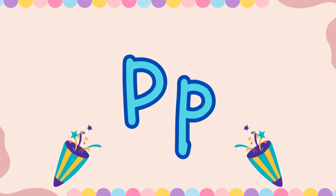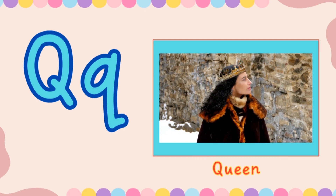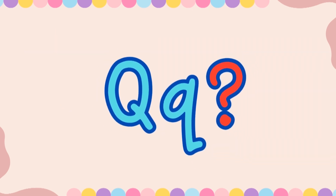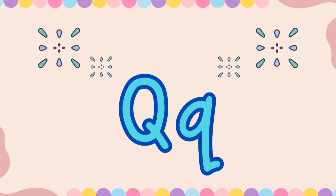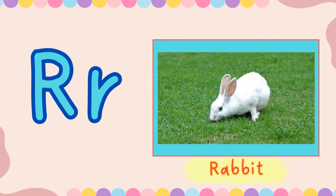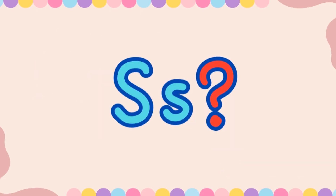P! Very good! This is letter Q. And Q is for Queen. What letter is this? Q! Very good! This is letter R. And R is for Rabbit. What letter is this? R! Very good! This is letter S. And S is for Sun. What letter is this?